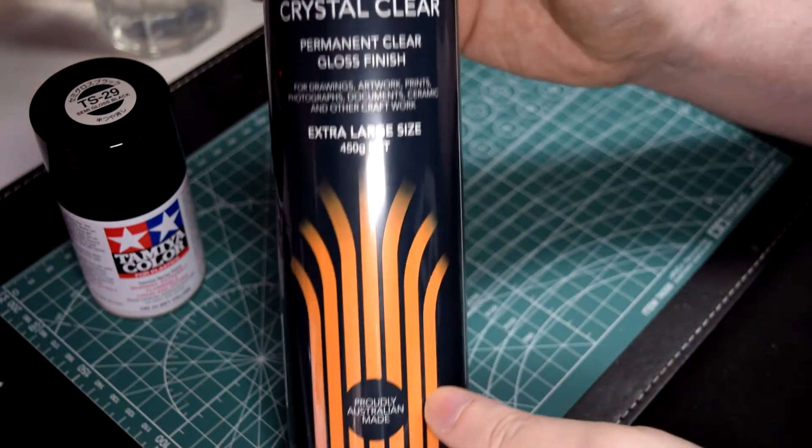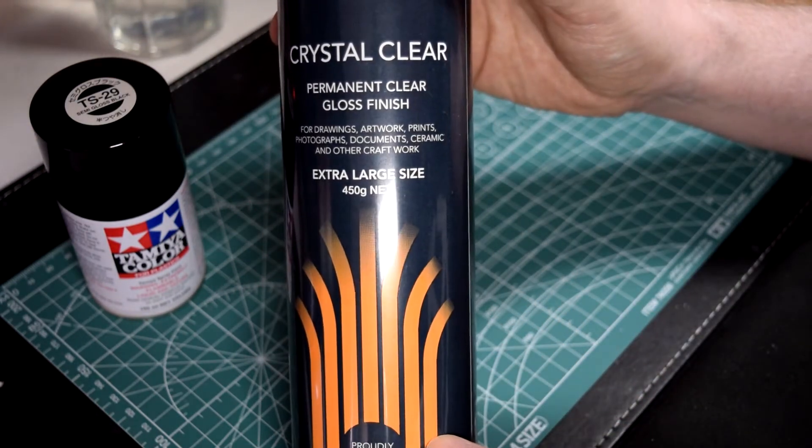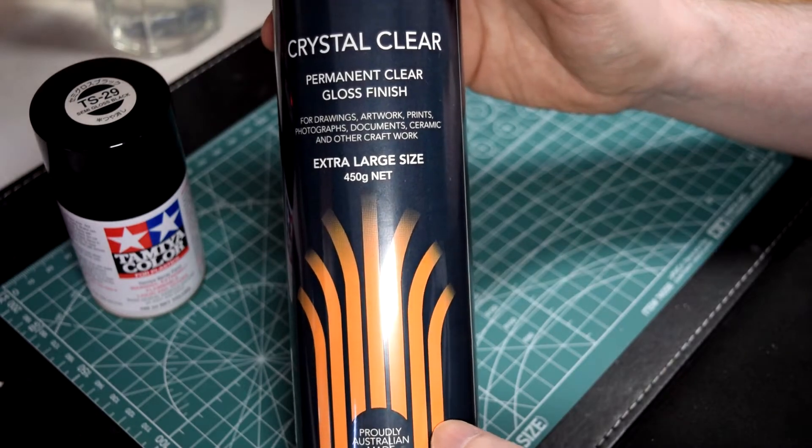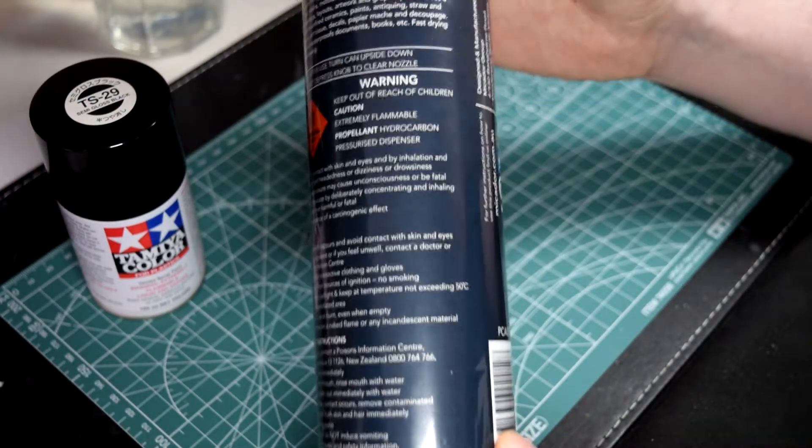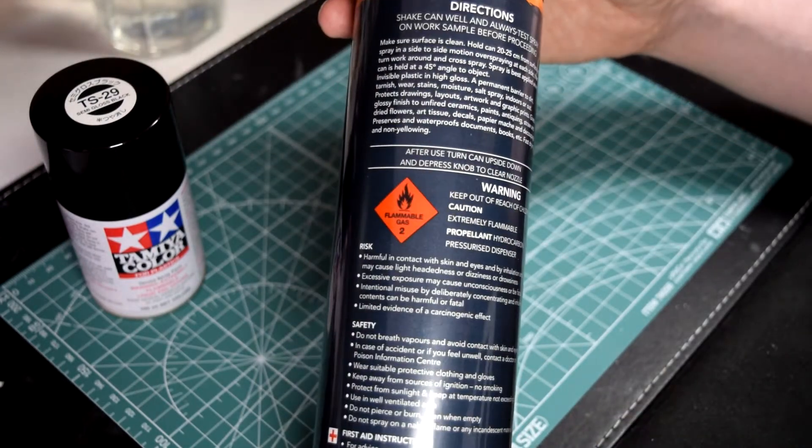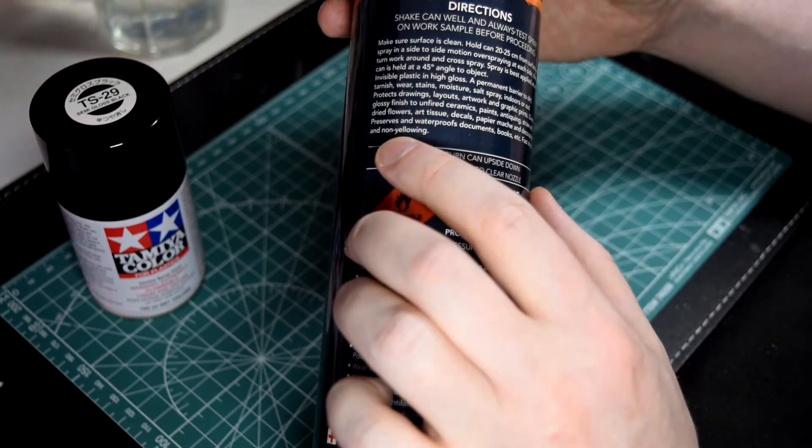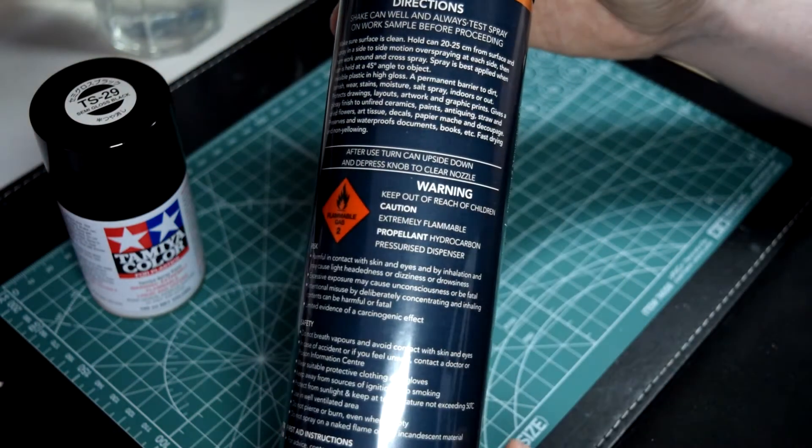You need to seal your paint with varnish, so I'm using Crystal Clear Gloss Finish. This one is quick-drying and non-yellowing, which means the pieces don't change color as the varnish ages.